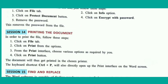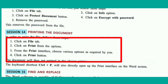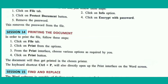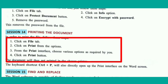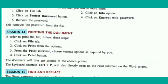Printing the document: to print the file, click on the File tab, then click on Print. The print interface will appear. Choose the various options as required, then click on the Print button and the document will be printed on the chosen printer. There is a shortcut key to open the print interface in MS Word: Ctrl+P.